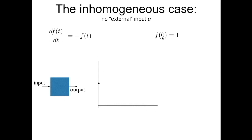Let me try to show you what would be the solution of this black box, this physical system, when the initial condition is given. Say this is time, and at time 0, f(0) equals 1. This is the initial condition. We know that the solution is an exponential, and the particular solution here is the exponential of minus t with the identified constant equal to 1.